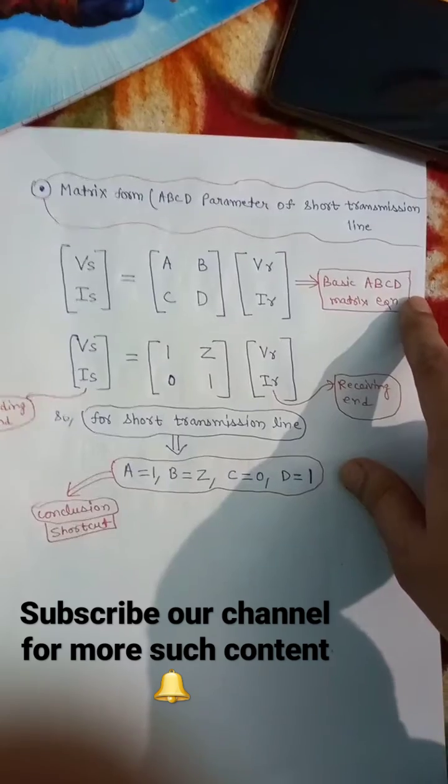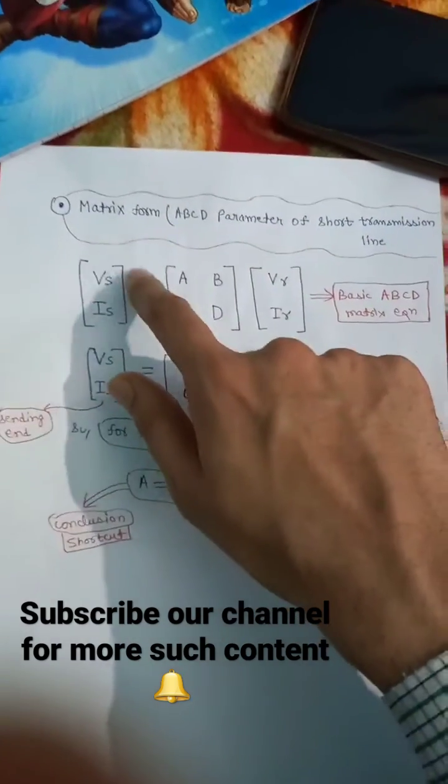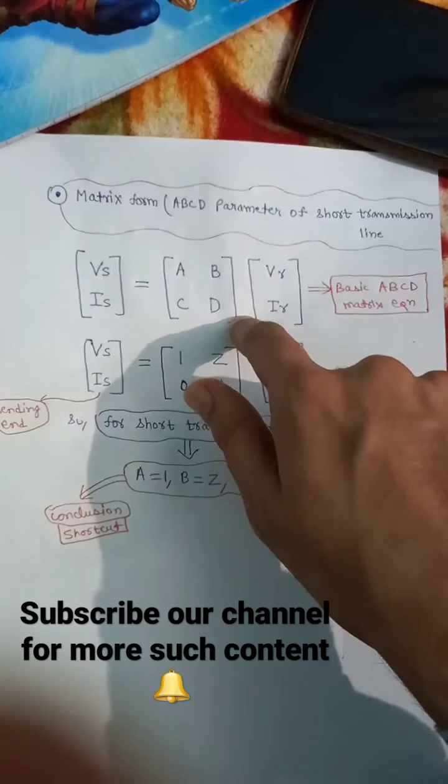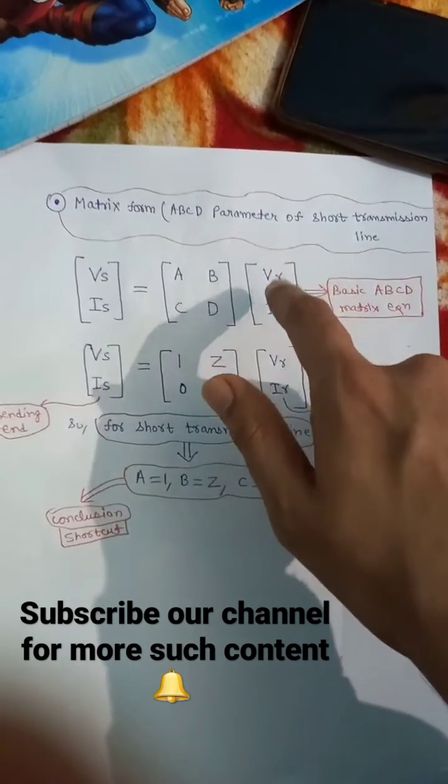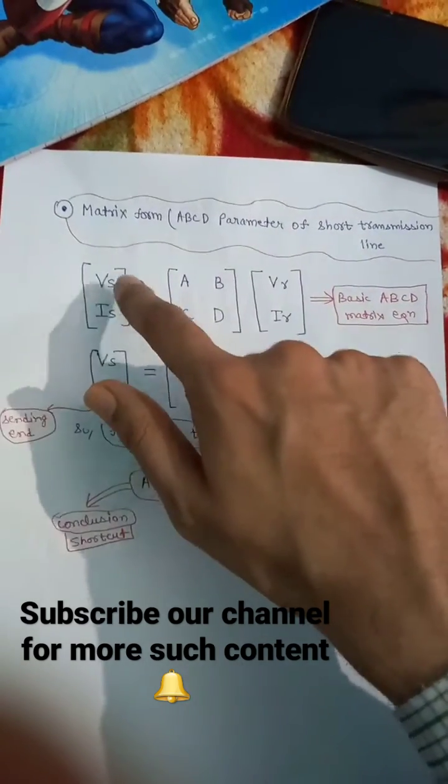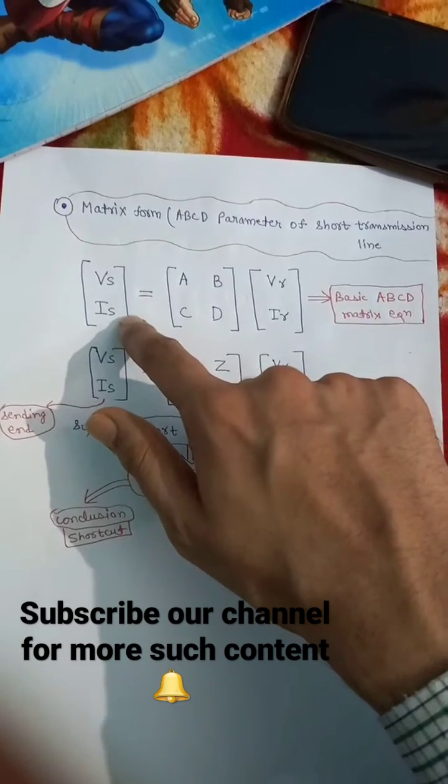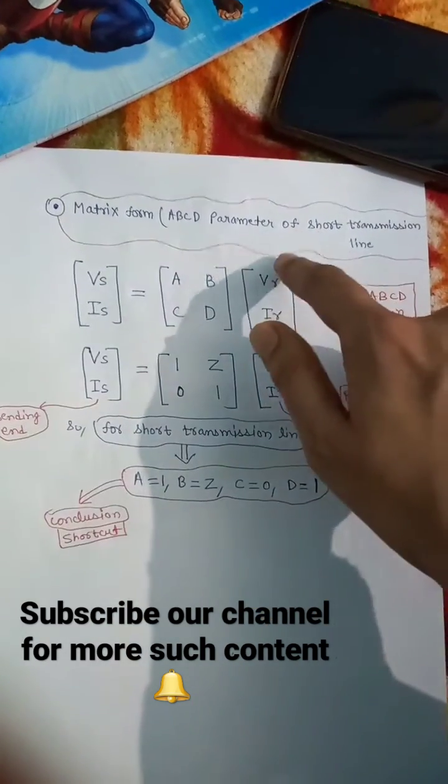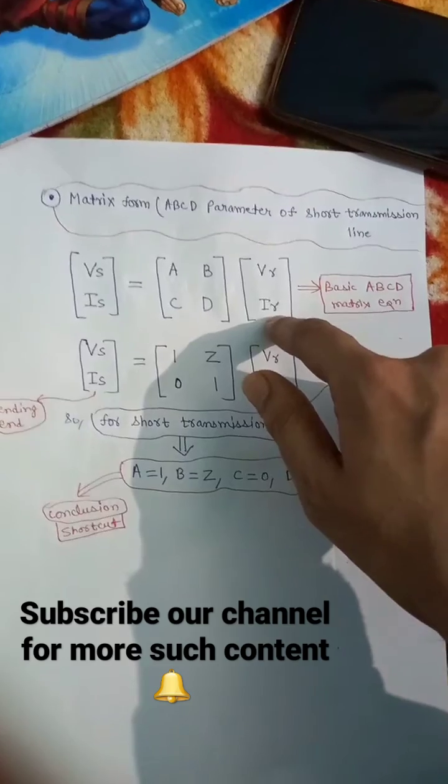From the basic ABCD matrix equation, we know that Vs Is is equal to ABCD parameter multiplied by Vr Ir, where Vs and Is is the sending end voltages and current, Vr and Ir is the receiving end voltage and current.